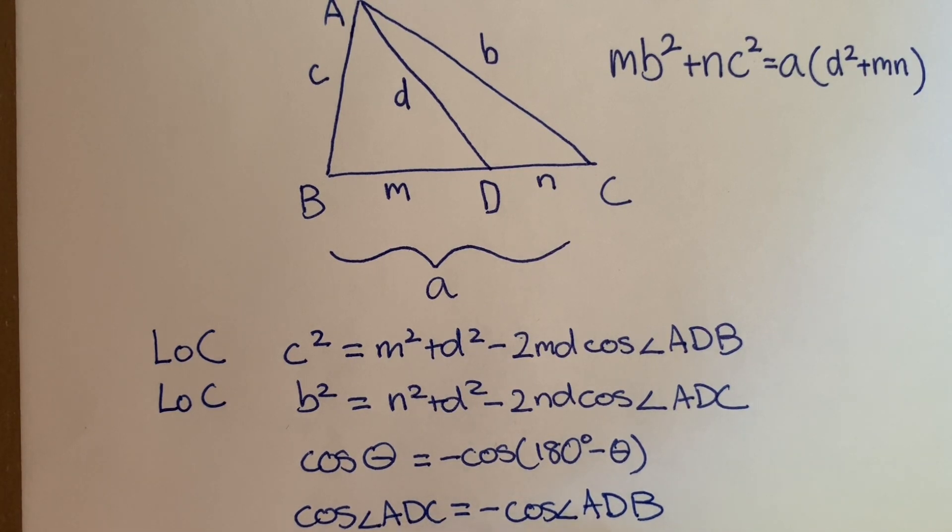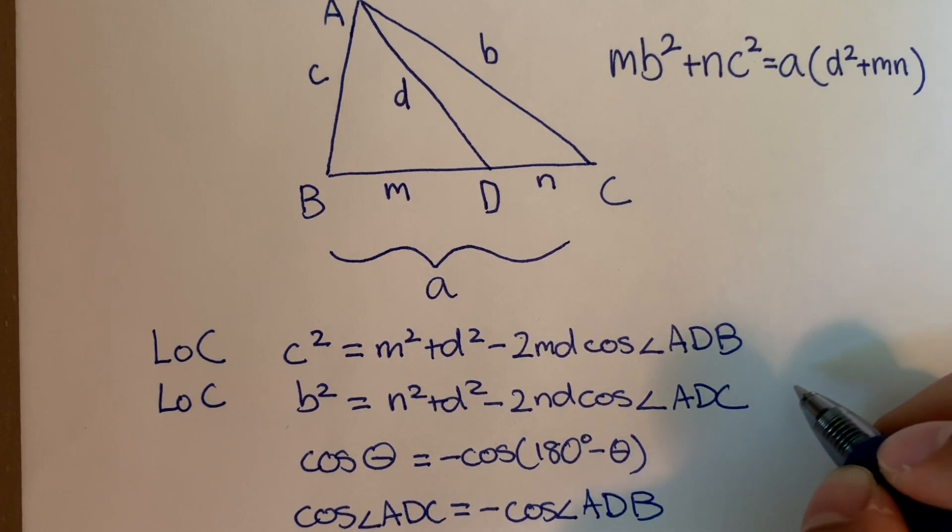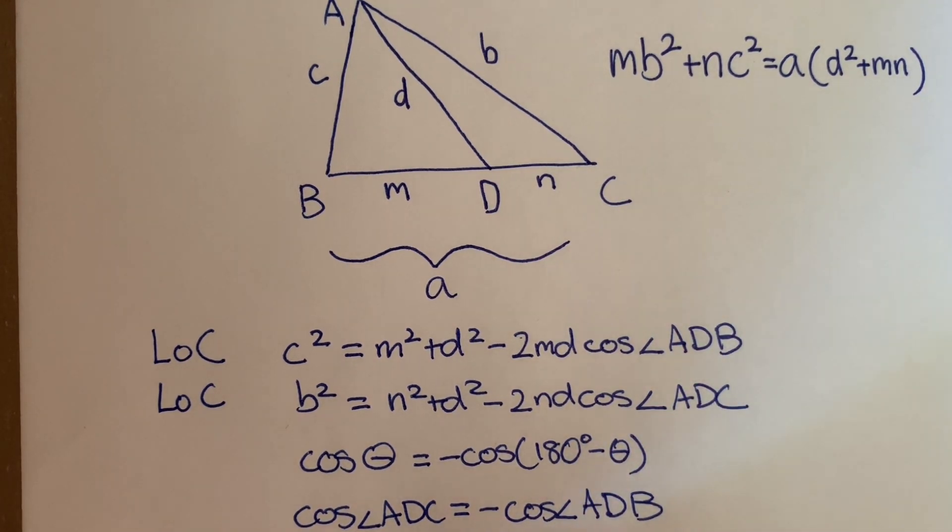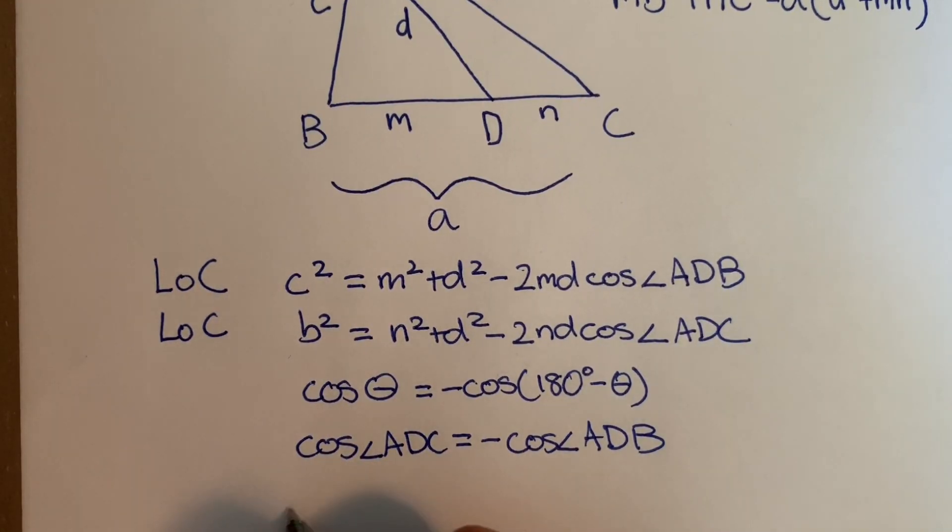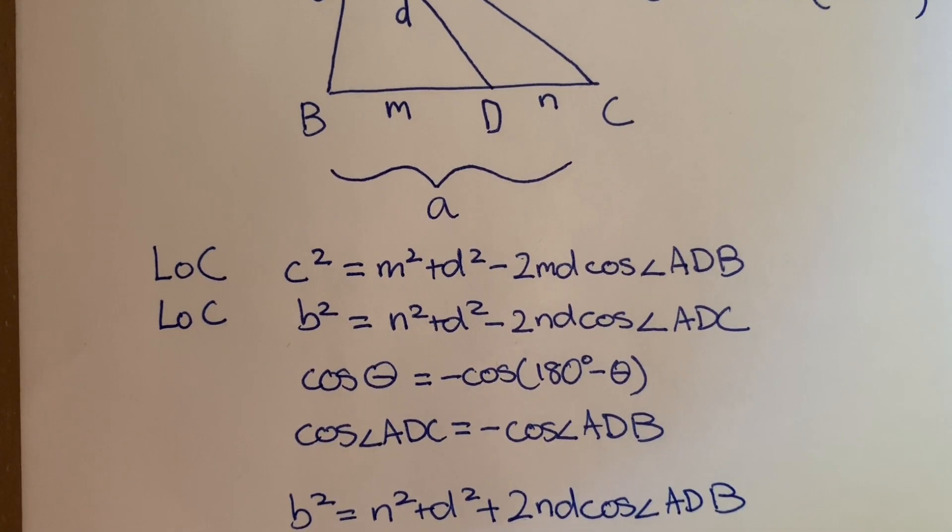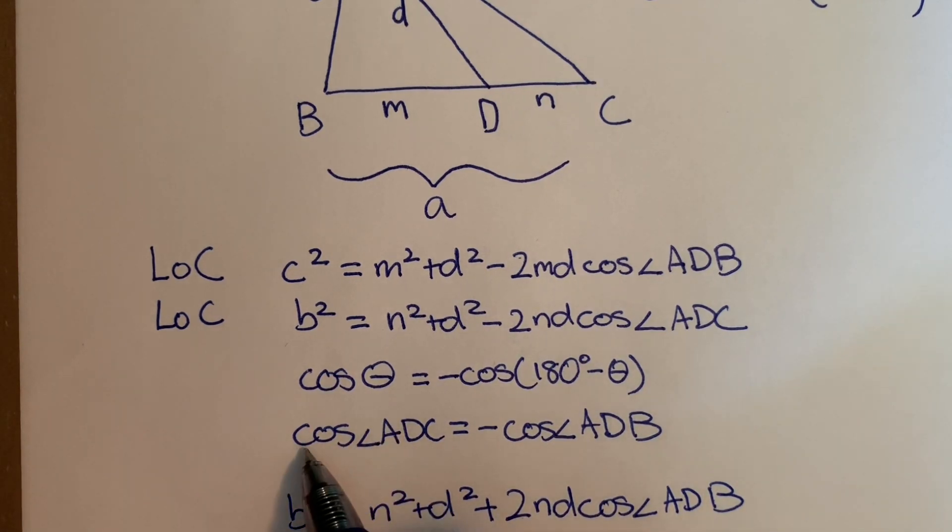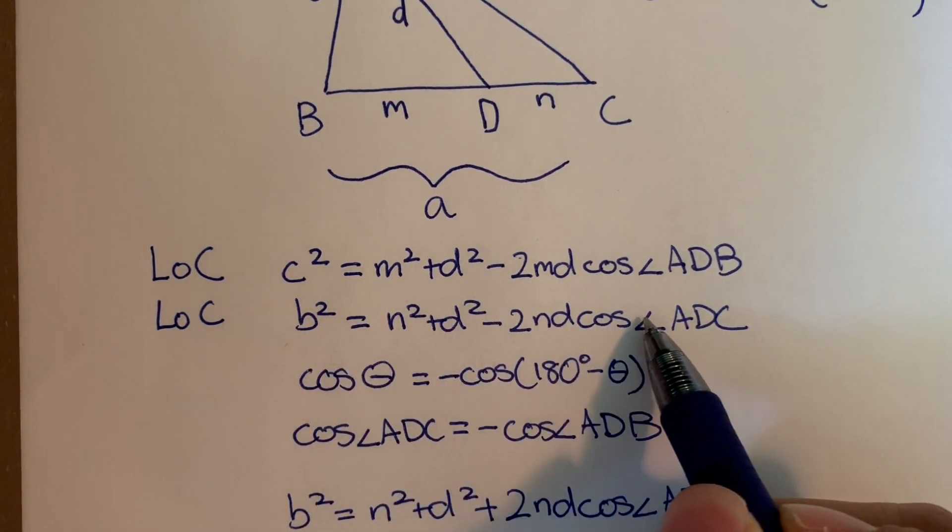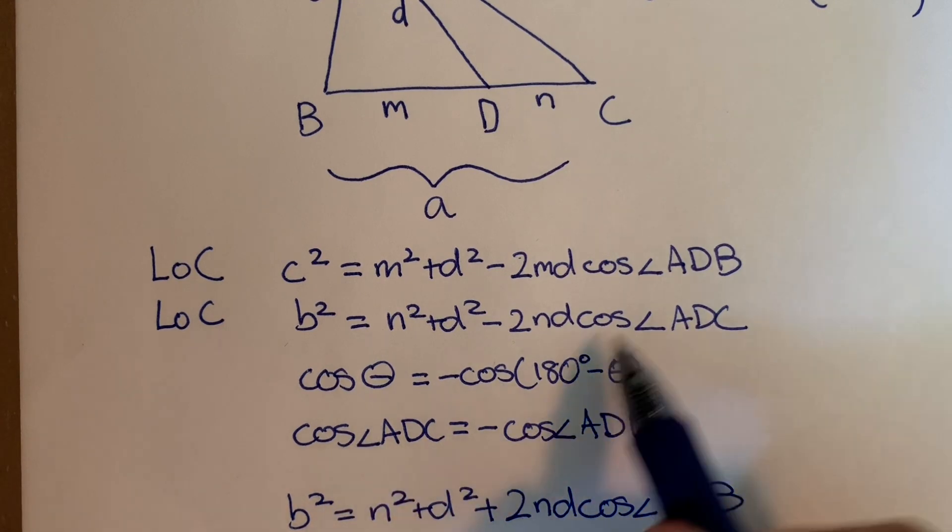Now we can substitute this in for our equation here. So substituting it, we have B squared equals N squared plus D squared minus, oh, instead of minus, it's a plus because the signs cancel out, plus 2ND cosine angle ADB. So that's our result when we substituted this in for this equation here.